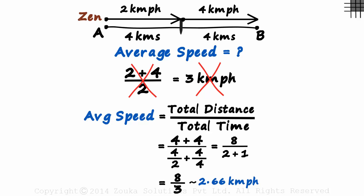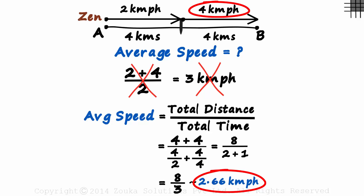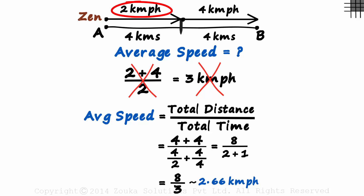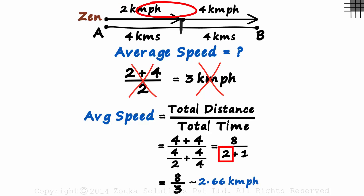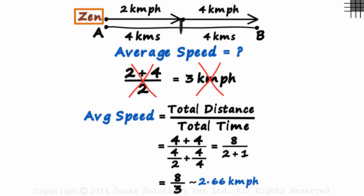Wait a moment. Look at the two speeds Zen traveled at: 2 and 4 kilometers per hour. Why is the average speed closer to 2? The answer is that the average speed is closer to 2 kilometers per hour because Zen is traveling for more time at that speed — 2 hours at 2 kilometers per hour, and only 1 hour at 4 kilometers per hour. If Zen had traveled for more time at 4 kilometers per hour, the average speed would have been closer to 4.